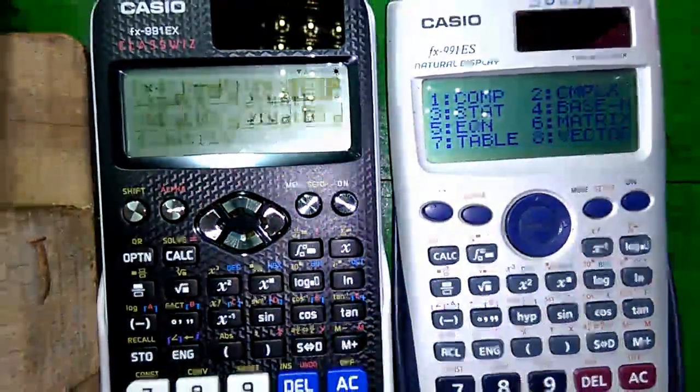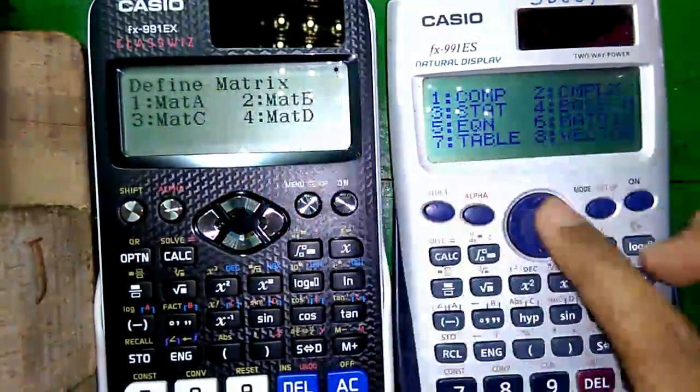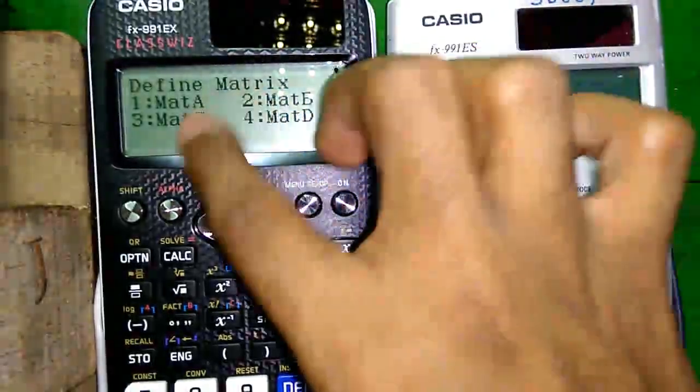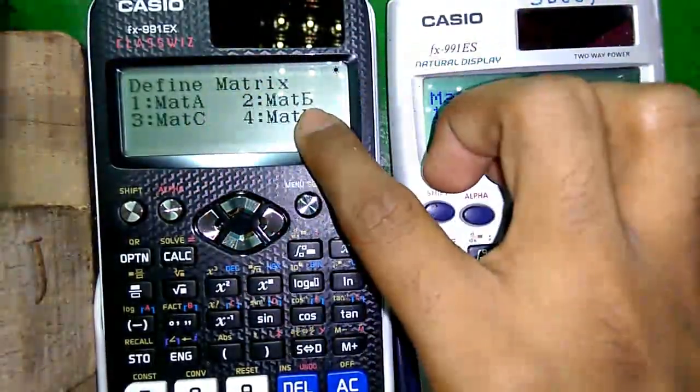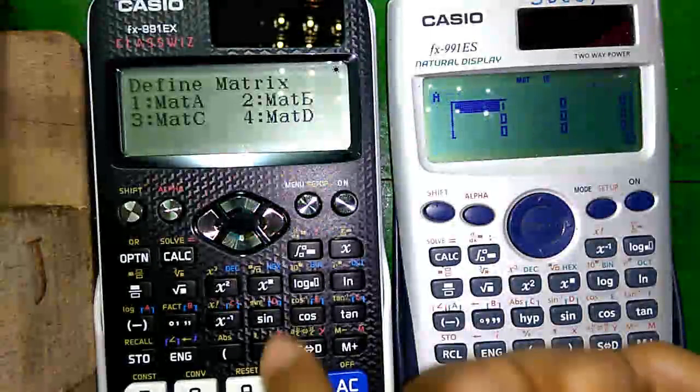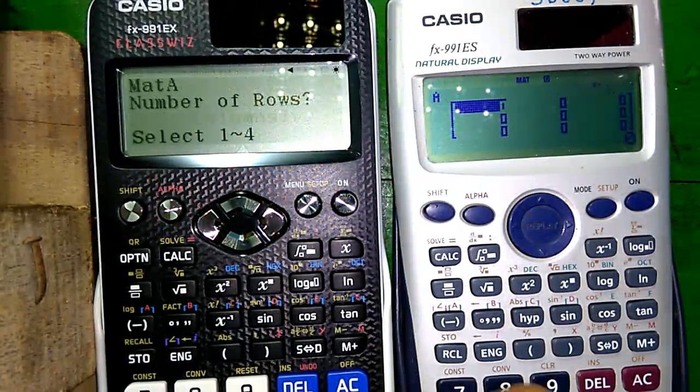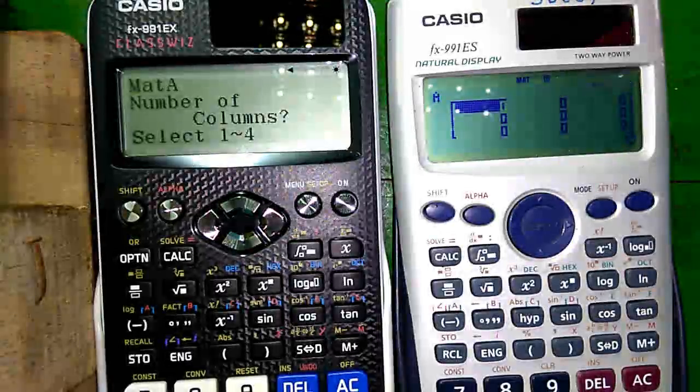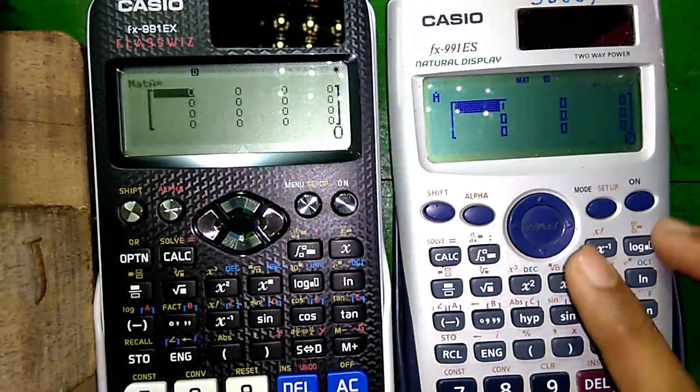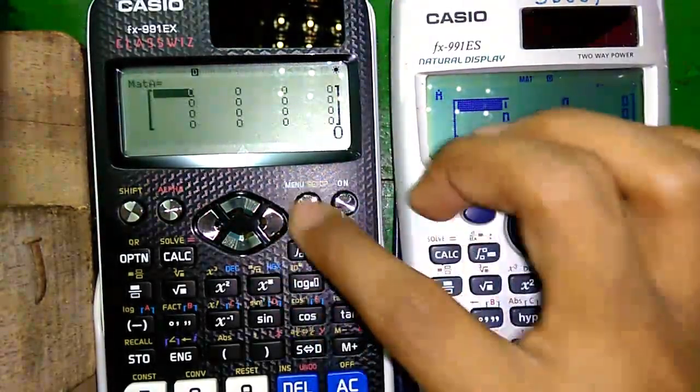And it can do matrices up to 4 matrices. Here it can do only 3 matrices, and that too with 4 cross 4 matrices. And here it can do only 3 cross 3 matrices. So this one has got more features.